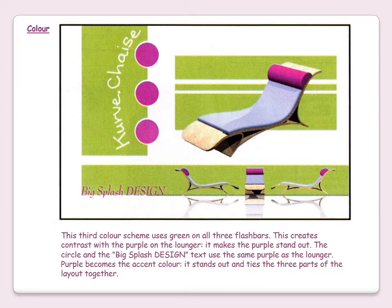This third colour scheme uses green on all three flash bars. This creates contrast with the purple on the lounger and makes the purple stand out. The circle and the big splash design text use the same purple as the lounger. The purple becomes the accent colour — it stands out and ties the three parts of the layout together.